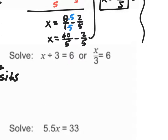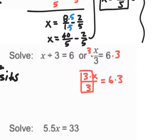Now this one: x divided by 3 is equal to 6. Some number divided by 3 gives me 6. To move this 3 to the other side, if I'm dividing by 3 I want to multiply both sides by 3. I get 3 times x divided by 3 equals 6 times 3. 3 divided by 3 is 1, so I have 1 times x equals 18. 1 times x is just x, so x is equal to 18.